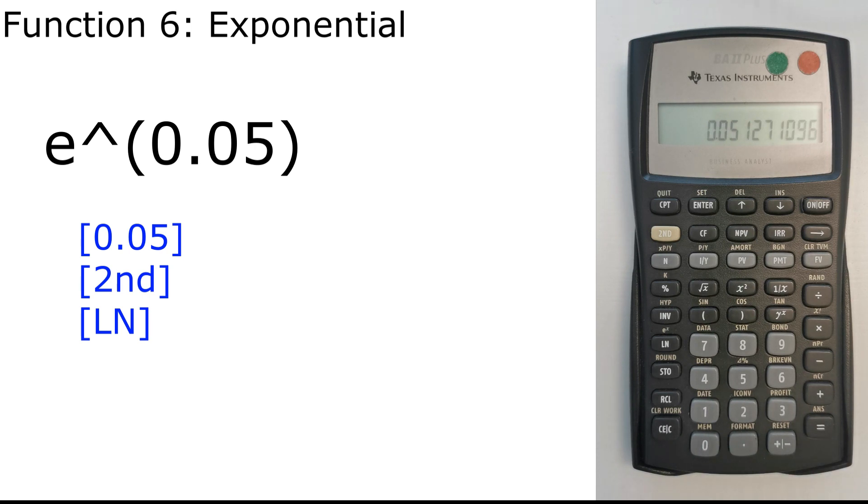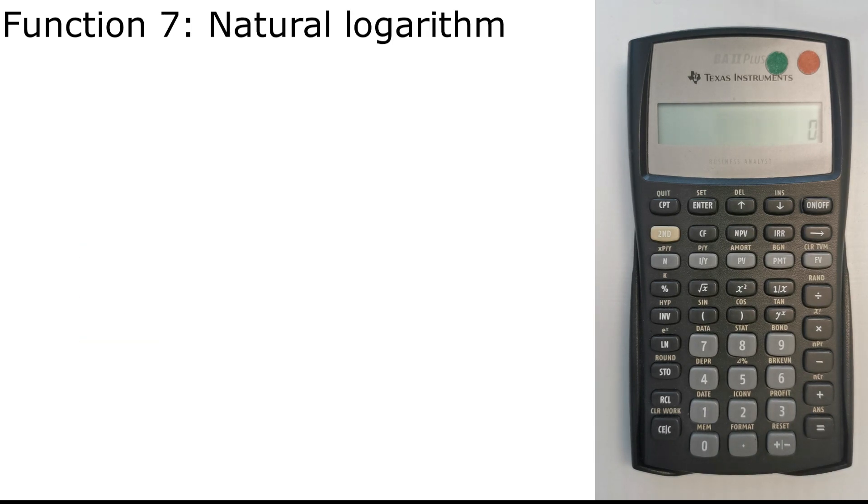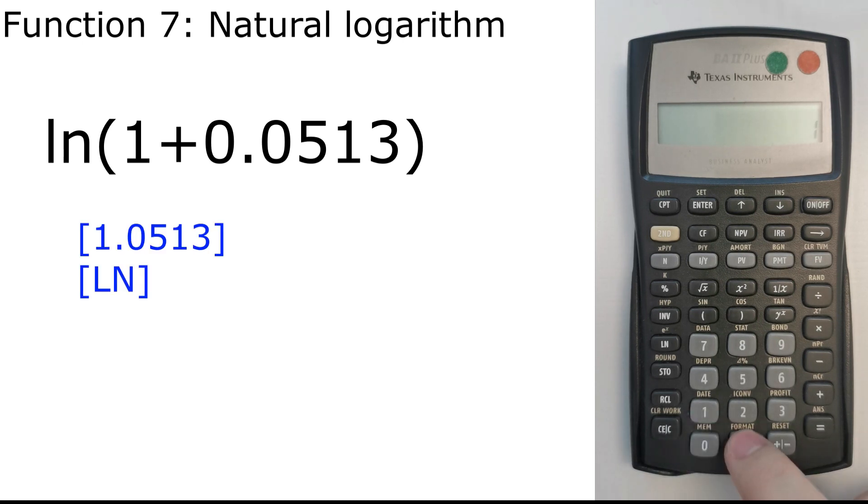And if you want to solve using the natural logarithm, which is ln. So let's say ln of 1 plus 0.0513. So what we press is 1.0513, then we press the ln. We get approximately 5%.